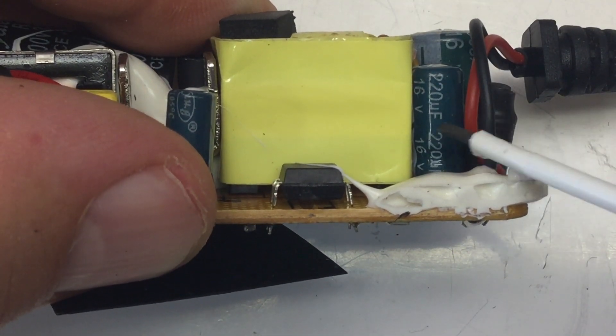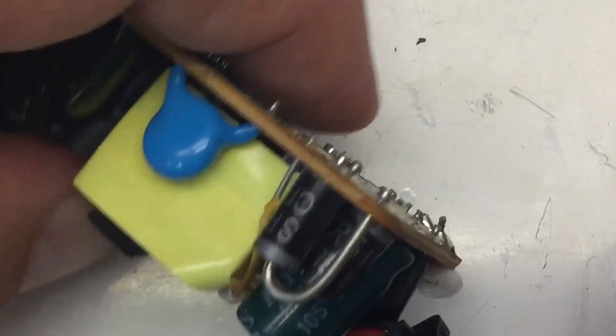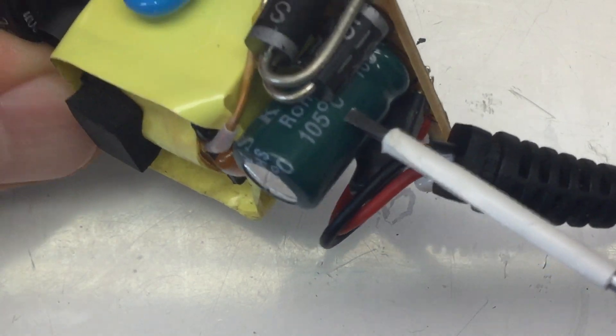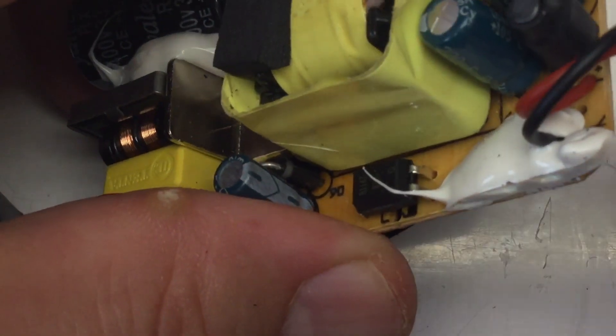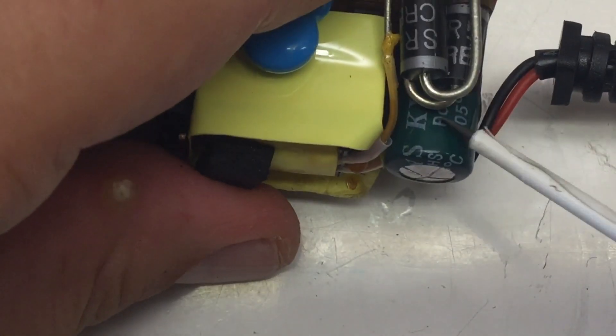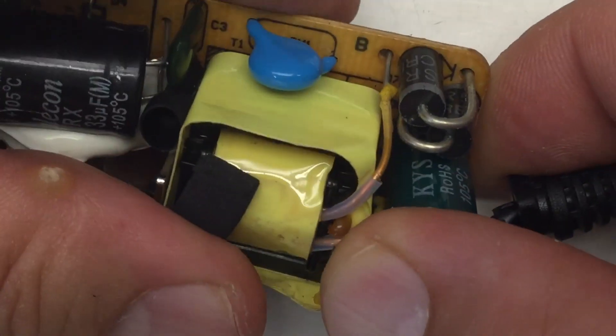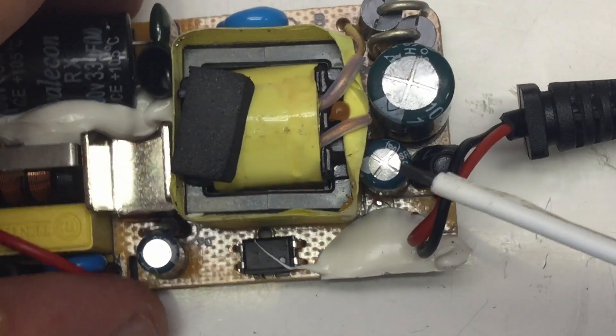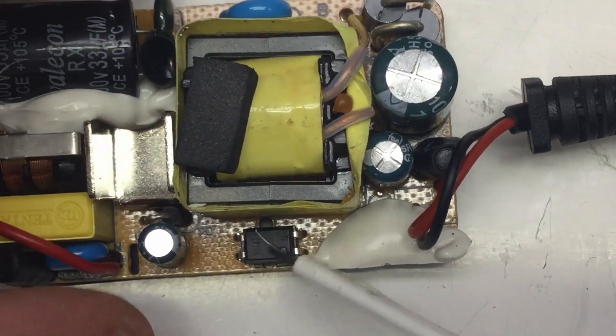And by the way, this is 220 microfarads, the second one 16 volts. And the first one is temperature range of 105 degrees C. So not that bad. And I can't see the manufacturer, but this is 1000 microfarads, 16 volts. It seems to be KYS, whatever. That one has the same color. So I guess it's also a KYS. And then of course we have the optocoupler here. From the low voltage back to the high voltage side.